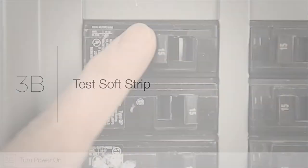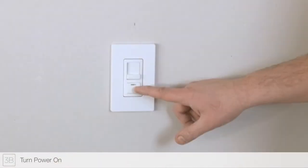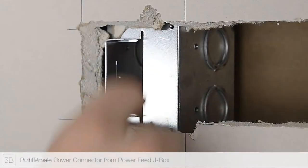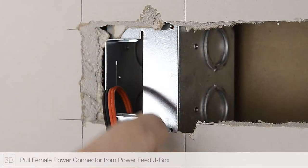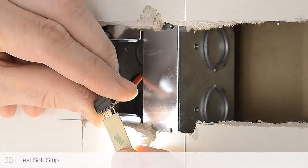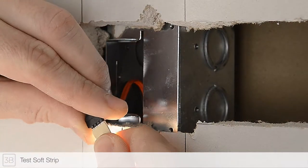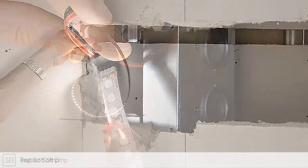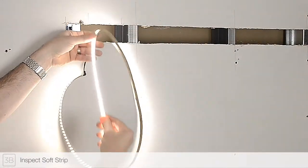Step 3B: Restore power to the junction box to test the LED soft strip. It is important to align the plus 24 VDC marking on the soft strip with the red wires of the power feed cable. Inspect the strip for any irregularities before continuing.